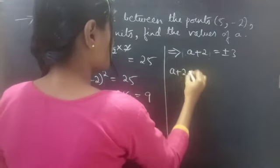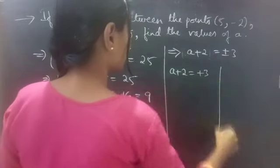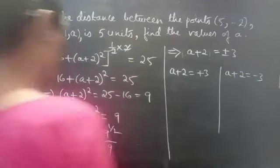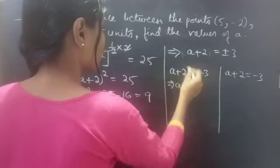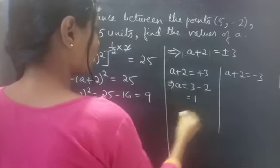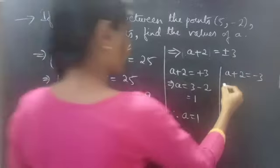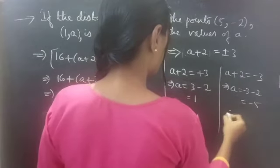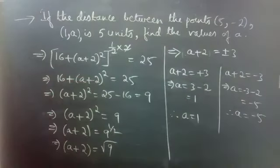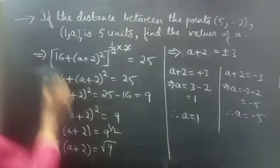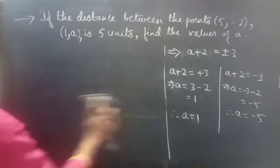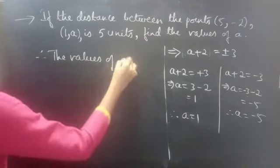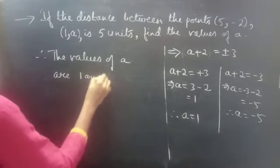So a plus 2 equals plus or minus 3. Case 1: a plus 2 equals plus 3, so a equals 3 minus 2, therefore a equals 1. Case 2: a plus 2 equals minus 3, so a equals minus 3 minus 2, therefore a equals minus 5. So the values of a are 1 and minus 5.